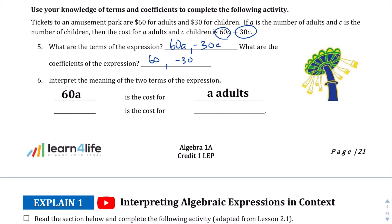Question number 6, interpret the meaning of the two terms of the expression. 60a is the cost for a adults and, obviously, 30c is going to be the cost for c children.